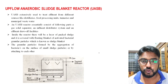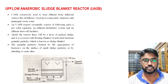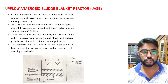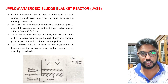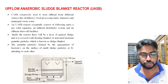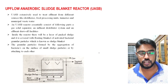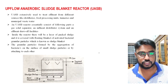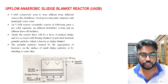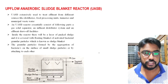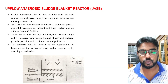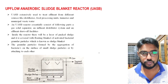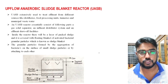The next method is the upflow anaerobic sludge blanket, or UASB. This is mainly used for wastewater treatment from many sources, such as wastewater from distilleries, municipal wastewater treatment, food processing units, and breweries. All these sources can use the UASB for treatment of their wastewater.